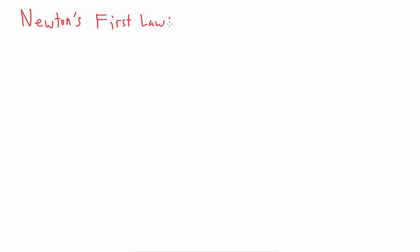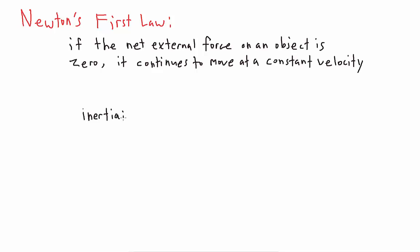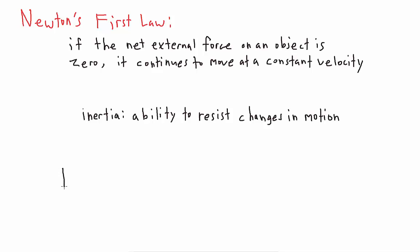This brings us to Newton's first law, which says that if the net external force on an object is zero, then the object continues to move at a constant velocity. This means if an object is at rest and there's no net external force on it, it stays at rest. If it's moving at a constant speed, it keeps moving at that speed in a straight line — constant velocity implies the velocity is not changing direction or magnitude. This is also known as the principle of inertia. Inertia is basically an object's ability to resist changes in its motion, and it is quantified by mass. The more mass an object has, the more inertia it has.